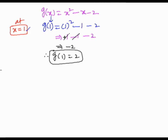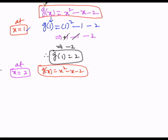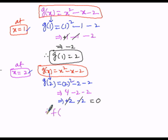In the second case, at x equals 2: g(x) equals x squared minus x minus 2. So g(2) equals 2 squared minus 2 minus 2, which is 4 minus 2 minus 2. Minus 2 and plus 2 cancel, giving 0. Therefore g(2) equals 0.